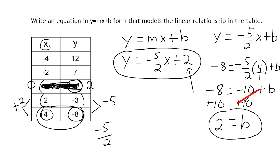So when they don't give you the x=0 point, find the slope, plug in one point's x and y values, and solve for b. That will be the value in your equation. Let's go ahead and do one more example.